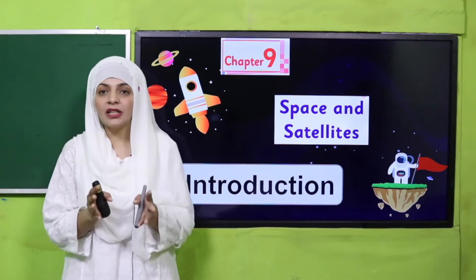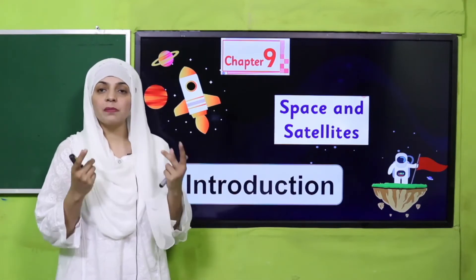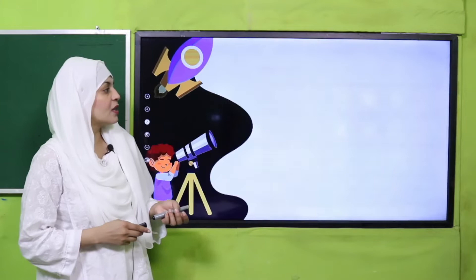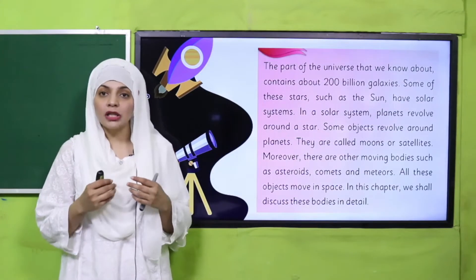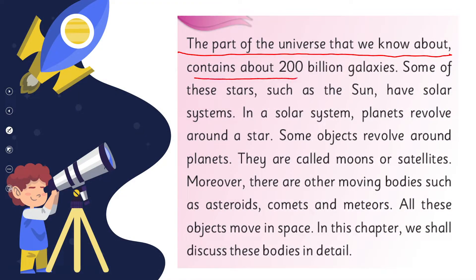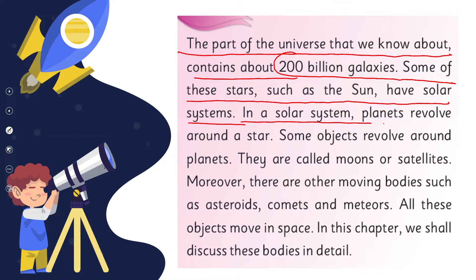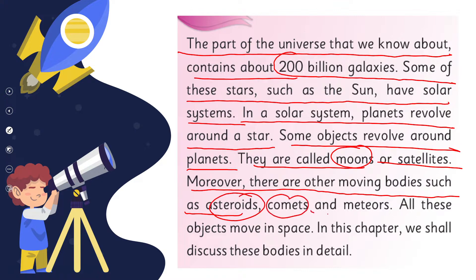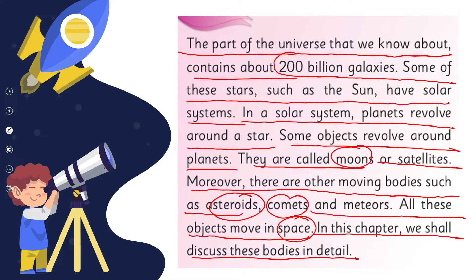Today I am going to give you a complete introduction of this unit. Space mein kya kuch hota hai, satellites kya hoti hai — is chapter mein in tamam cheezon ka poora study karenge. The part of the universe that we know about contains about 200 billion galaxies. Some of these stars, such as the Sun, have solar systems, where planets revolve around a star. Some objects revolve around planets — they are called moons or satellites. Moreover, there are other moving bodies such as asteroids, comets, and meteors. All these objects move in space, and in this chapter we shall discuss these bodies in detail.